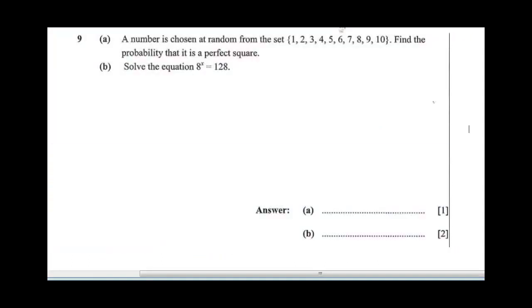Question 9 says, a number is chosen at random from the set 1, 2, 3, 4, 5, 6, 7, 8, 9, 10. Find the probability that it is a perfect square. What are perfect squares? Perfect squares in this number are 4 and 9, because 4 is 2 squared, 9 is 3 squared. That means we have two outcomes.